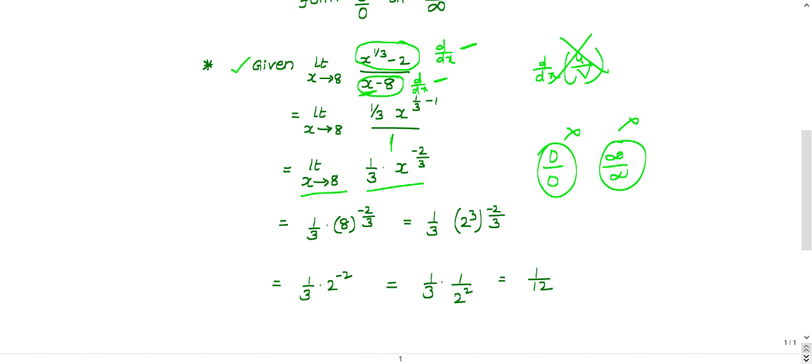1 by 3, x is nothing but 8. 8 power minus 2 by 3. 8 is nothing but 2 cube. 3, this 3 will get cancelled. 1 by 3 into 2 power minus 3. So it is like 1 by 3 into 1 by 2 square, 1 by 3 into 4. Finally, you will get answer as 1 by 12. This is a constant.